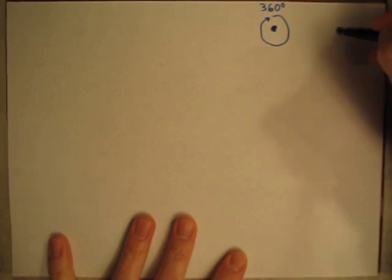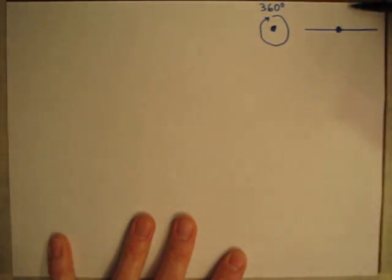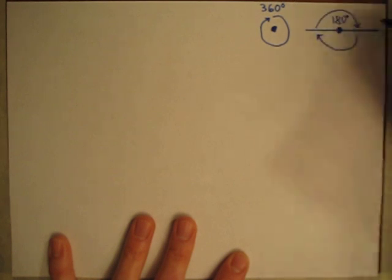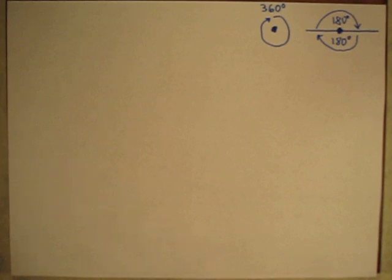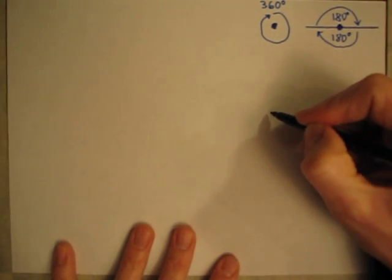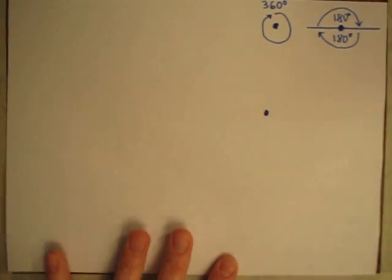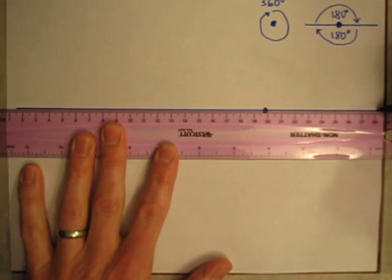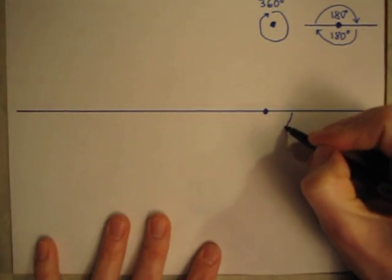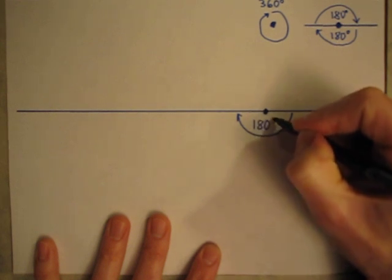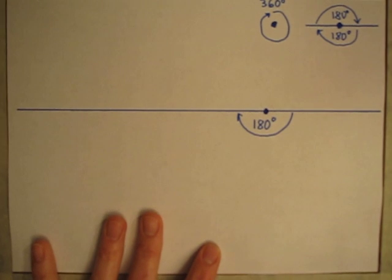If I take another point and draw a line through it, there's a top side and a bottom side — I've split it in half. The top side is half of 360 degrees, so that's 180 degrees, and the bottom side is the other half, also 180 degrees. If I pick a point and draw a line all the way across, going halfway around is 180 degrees, and the top side would also be 180 degrees.